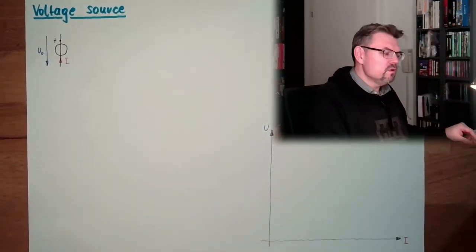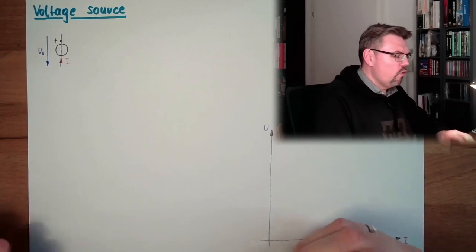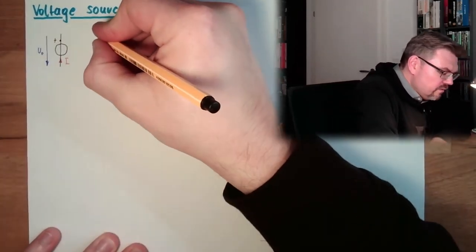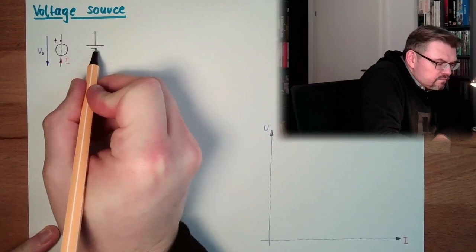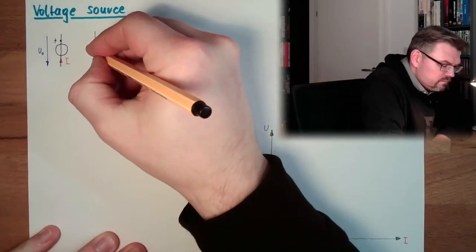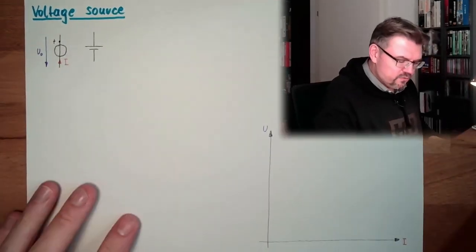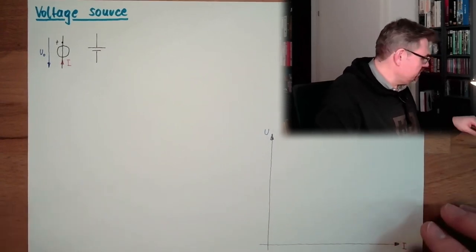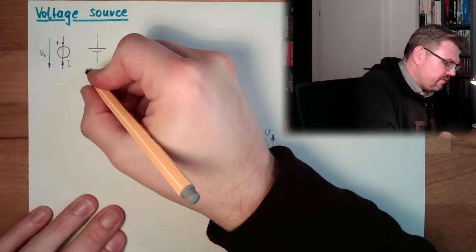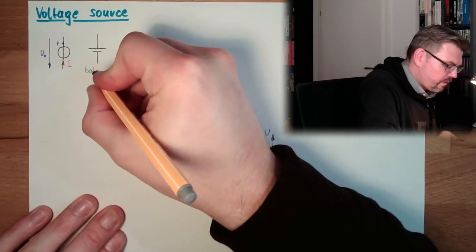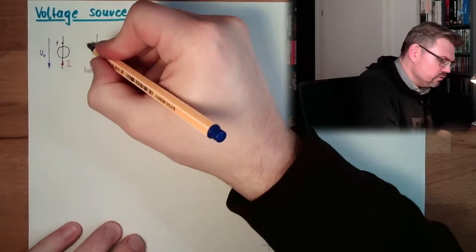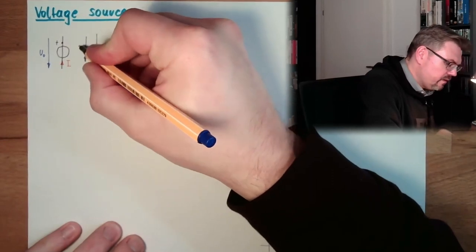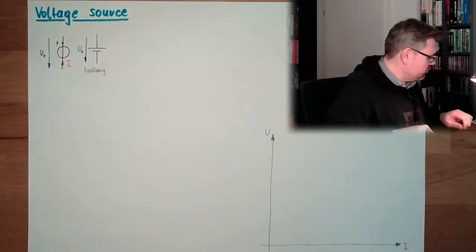There is also another symbol which would show also a voltage source. It would look like that. This is usually a battery. So we have here this is a battery. But there is also the source voltage of the battery. And there is also the current.